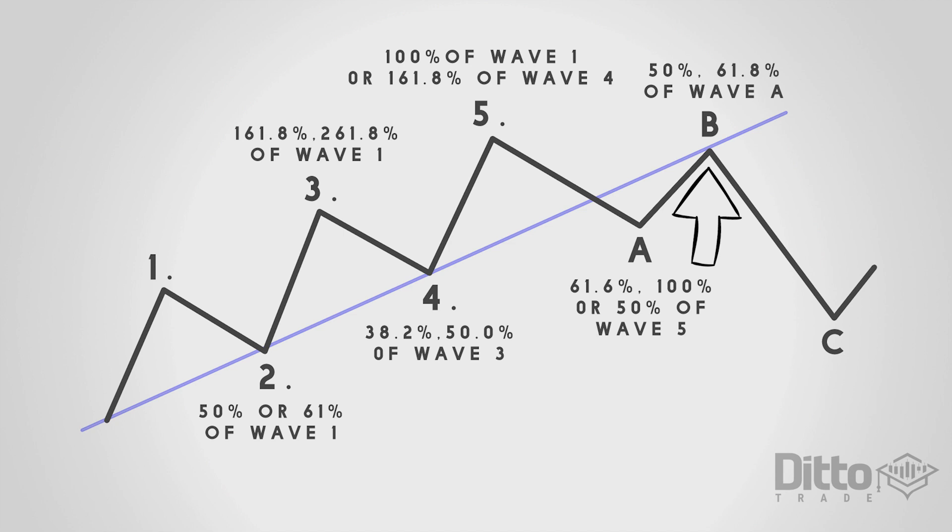Wave B is the correction. Prices reverse higher. Some participants will see this as a resumption of the bull market. Technical analysts may see the peak as the right shoulder of the head and shoulders reversal pattern. Fundamentals are probably getting worse at this point but not entirely negative and volume during wave B should be lower than in wave A.